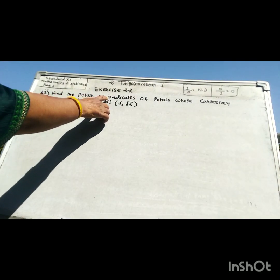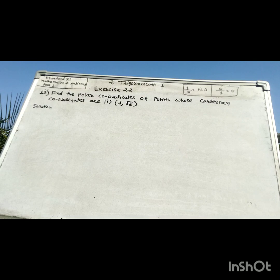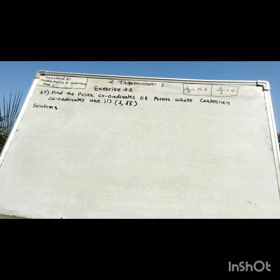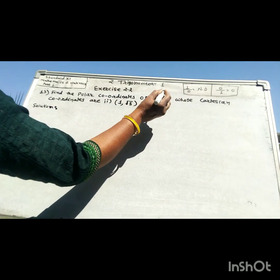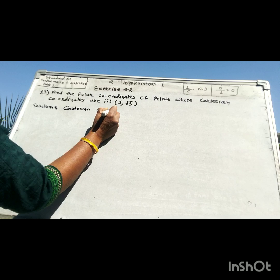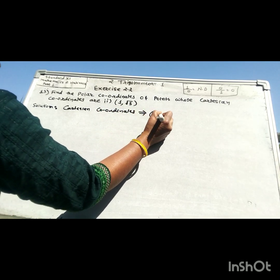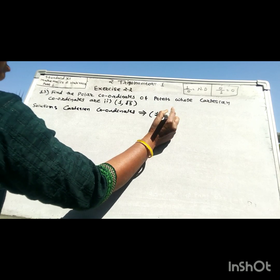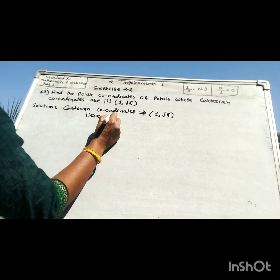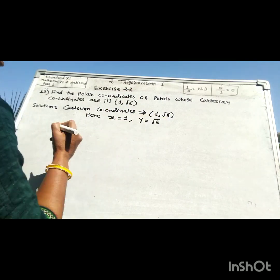Question 13: Find the polar coordinates of points whose Cartesian coordinates are 1 and root 3. Here x is equal to 1 and y is equal to root 3.